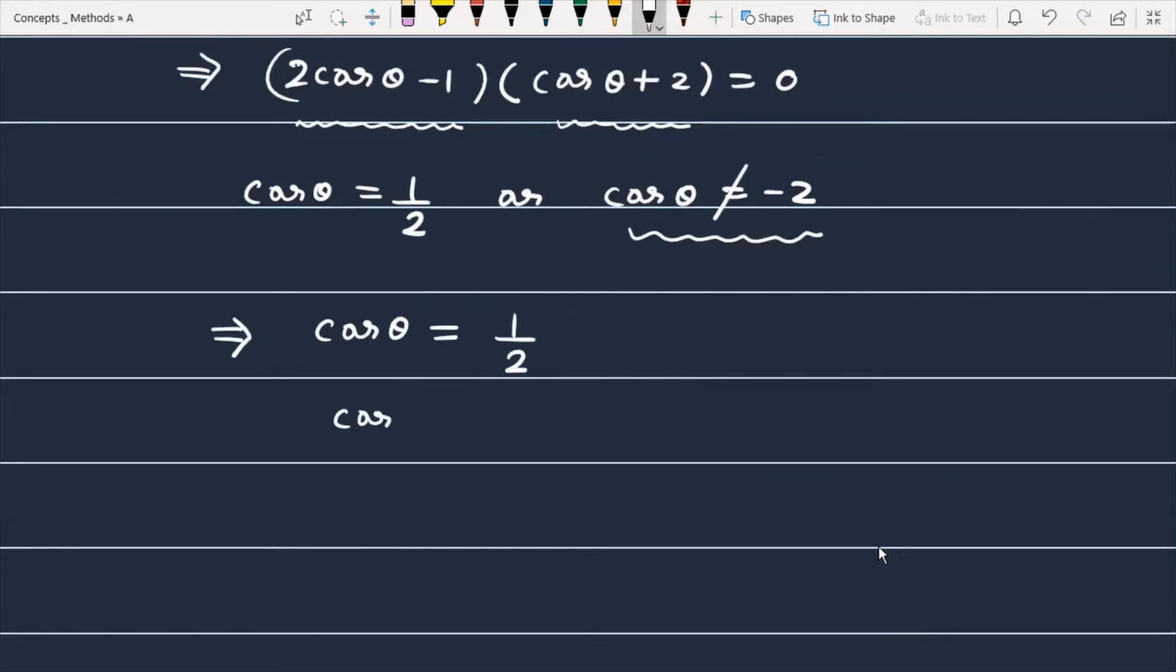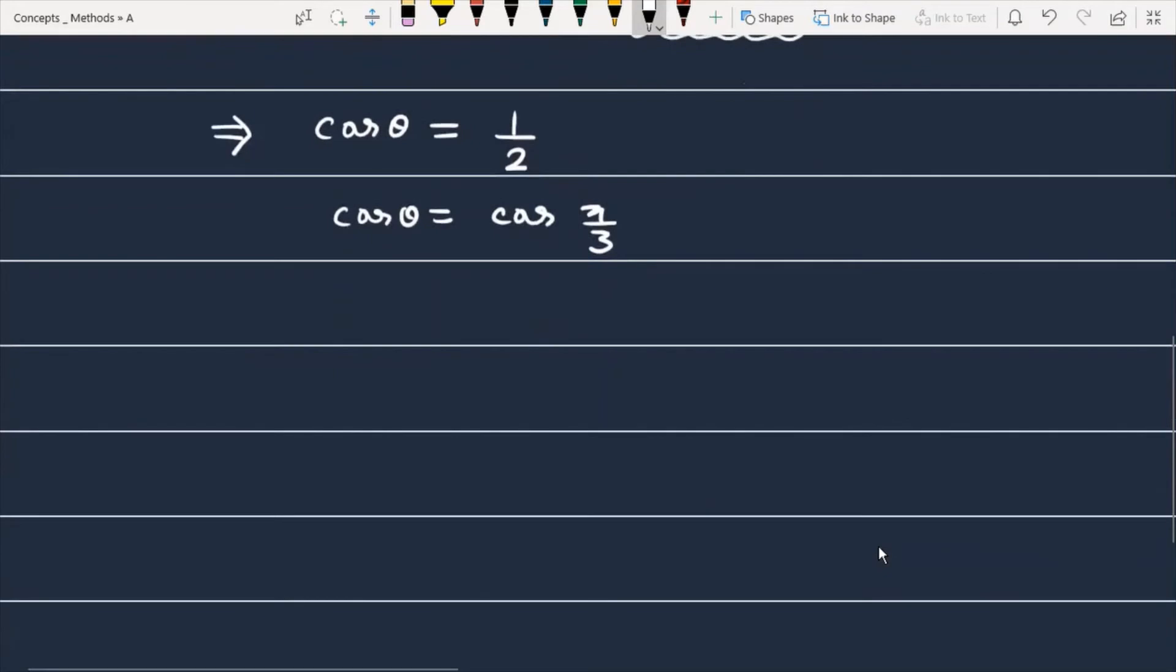That means cosθ equals cos of π/3. And given the general solution, that means θ equals 2nπ plus or minus π/3 where n belongs to integers.